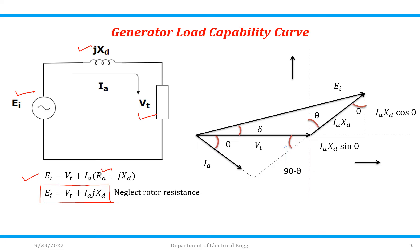VT is the reference. IA will be the current. The angle between them is nothing but theta. As the RA component is not there, we can show this IA·XT component. If I join this, what we get is nothing but EI. The angle delta exists between your EI — that is, the generated voltage — and the terminal voltage VT. I will draw a dotted line extended here. This angle will be theta, this angle is 90 degrees, so this angle will be 90 minus theta.